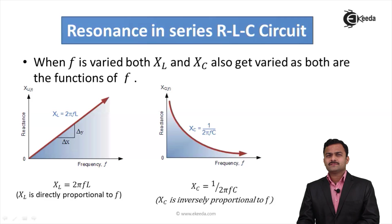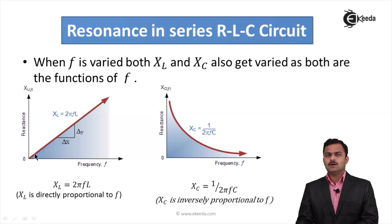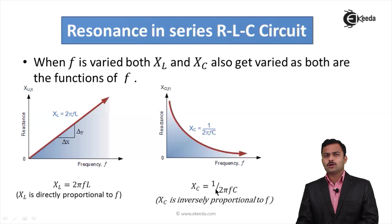Inductive reactance XL is given by 2πfL, so it is directly proportional to frequency. If you plot it, you will get a straight line passing through the origin. Capacitive reactance XC is given by 1/(2πfC), so it is inversely proportional to frequency, and if you plot it you will get a rectangular hyperbola.